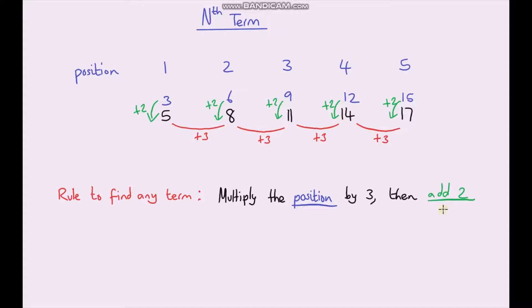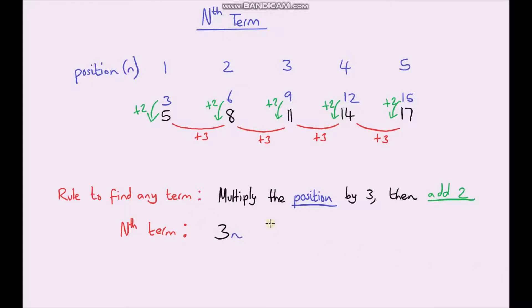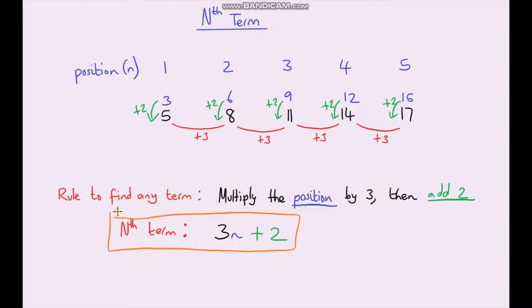Now we're just going to rewrite this statement using algebra, and we're going to call that the nth term. The first thing we need to do is multiply the position by 3, so we do 3 times the position. With sequences we generally refer to the position using the letter n, so we can write 3 times n, or just simply 3n. Then we just add 2, so it's going to be 3n plus 2. This is our nth term — it's exactly the same statement, just replaced with an algebraic expression.